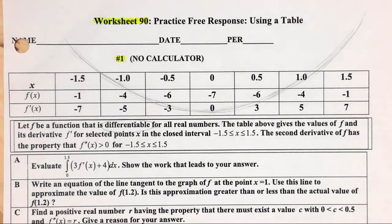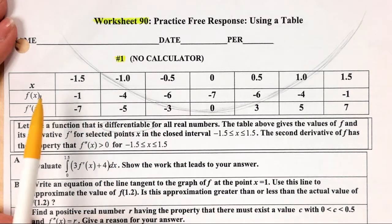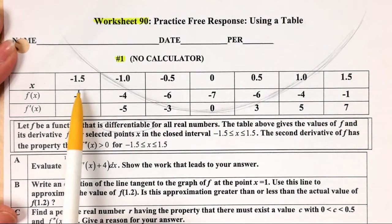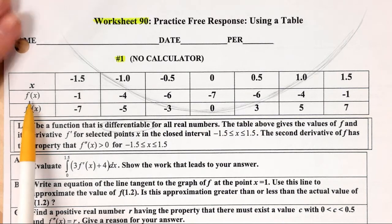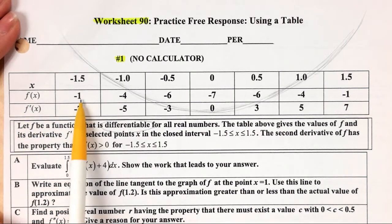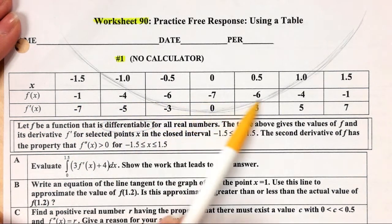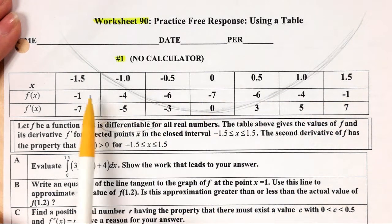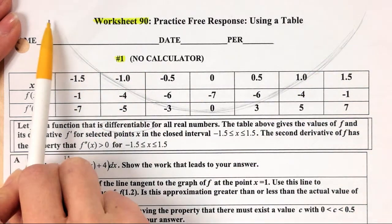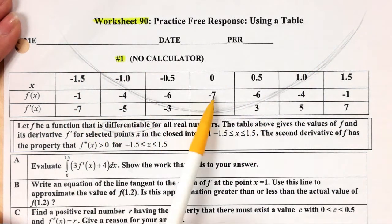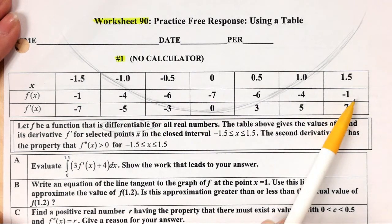Let's use a table. They give us a lot of information at the very beginning, so I'm going to parse it out before I get started. First they give you x values from negative 1.5 to 1.5, and then they give you f of x — the y values. You can see the y values go lower and then they get higher again, so I drew this little representation of f of x: it goes down and then it goes up.